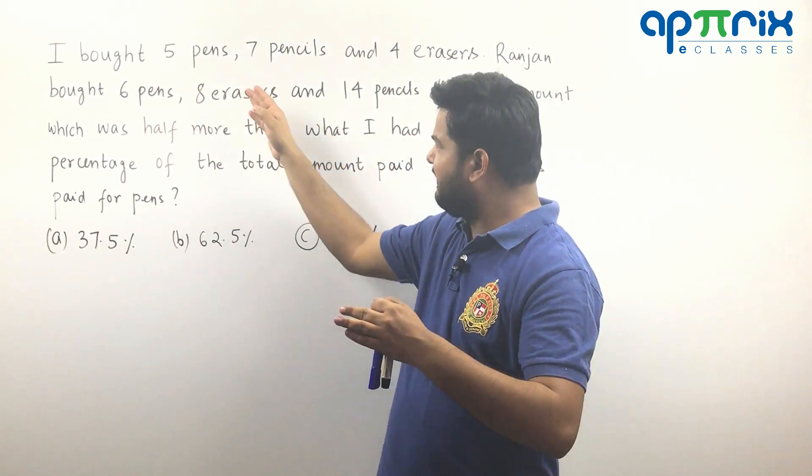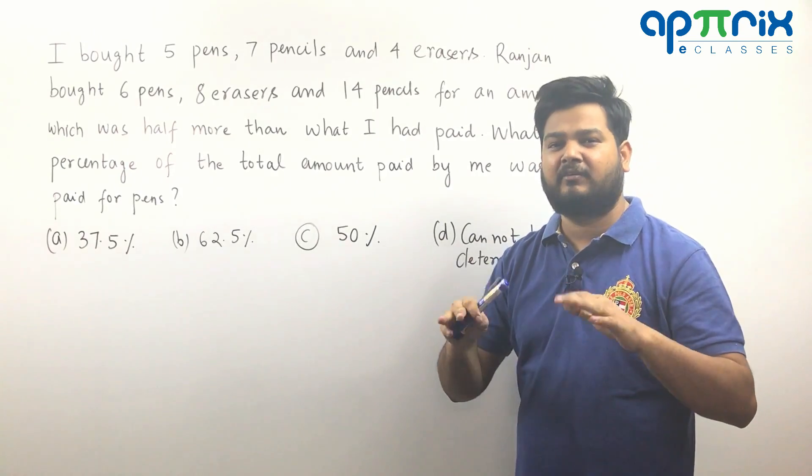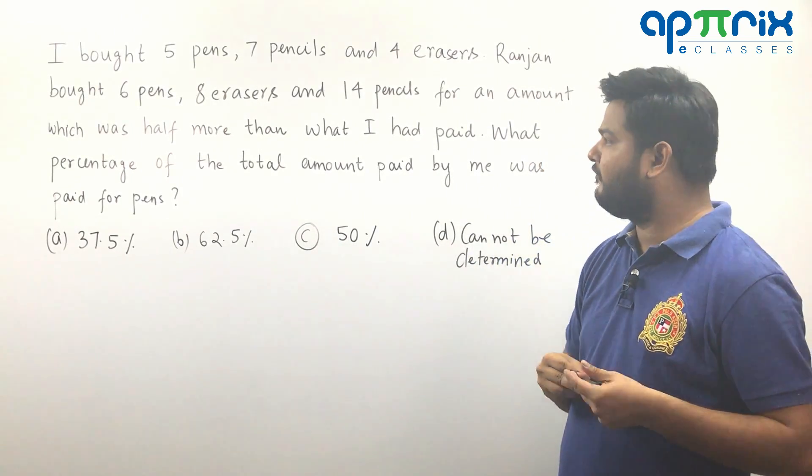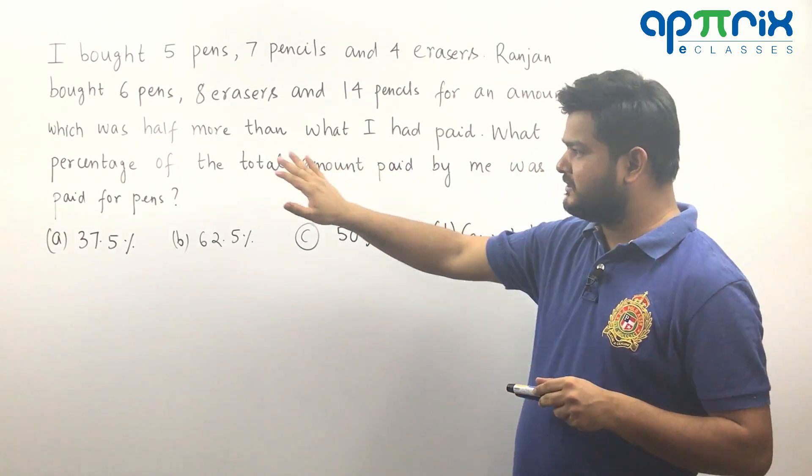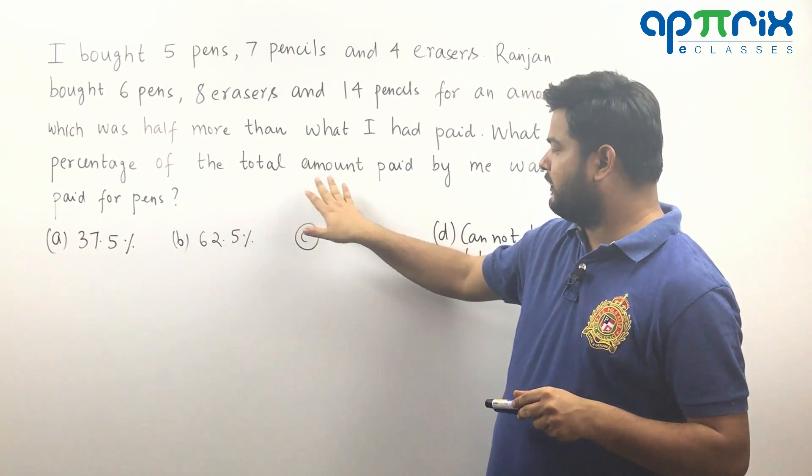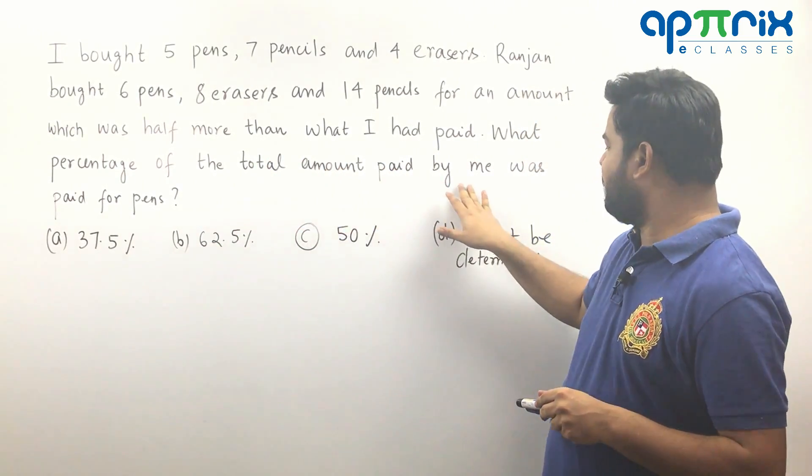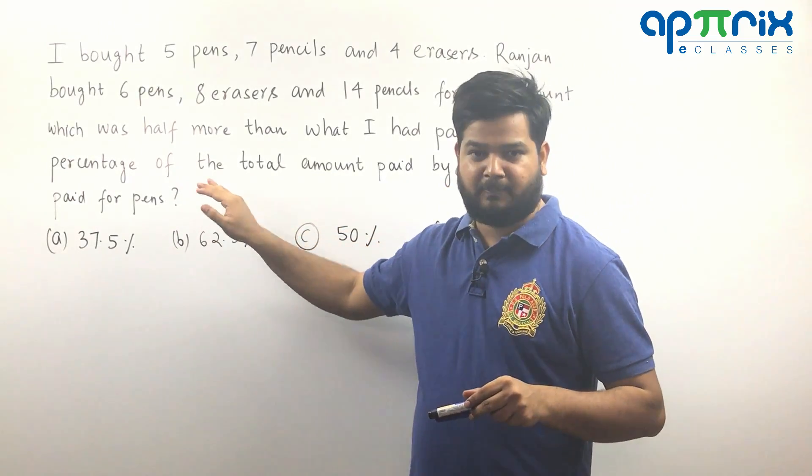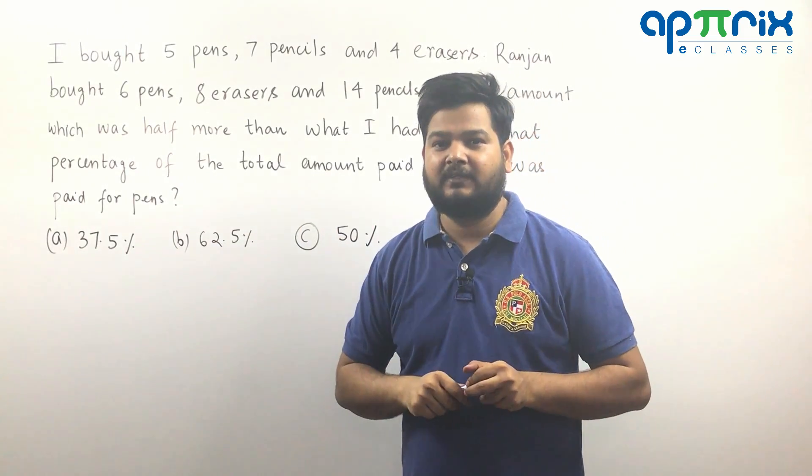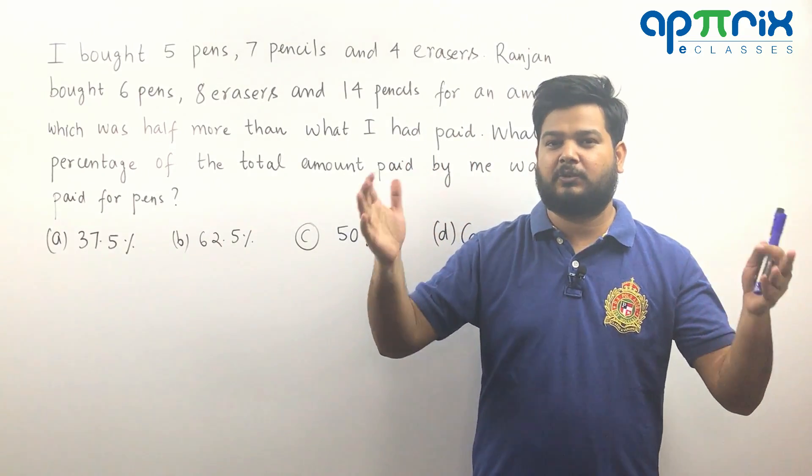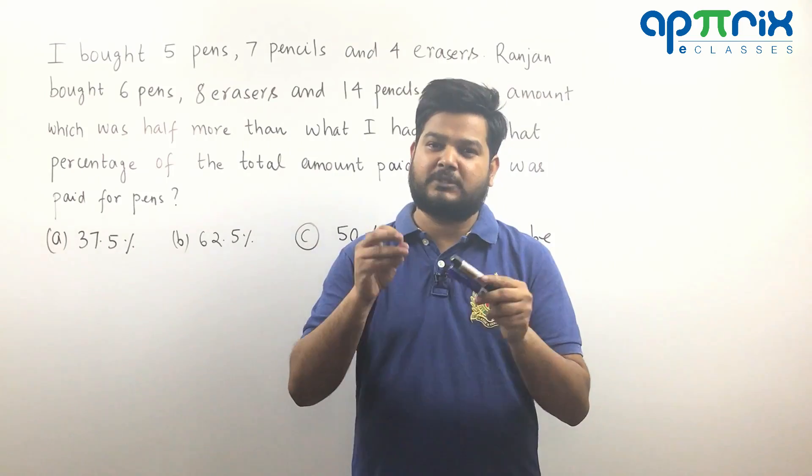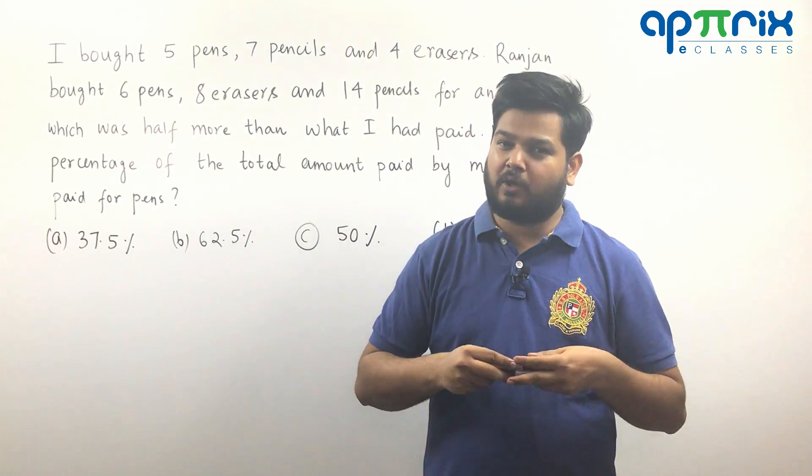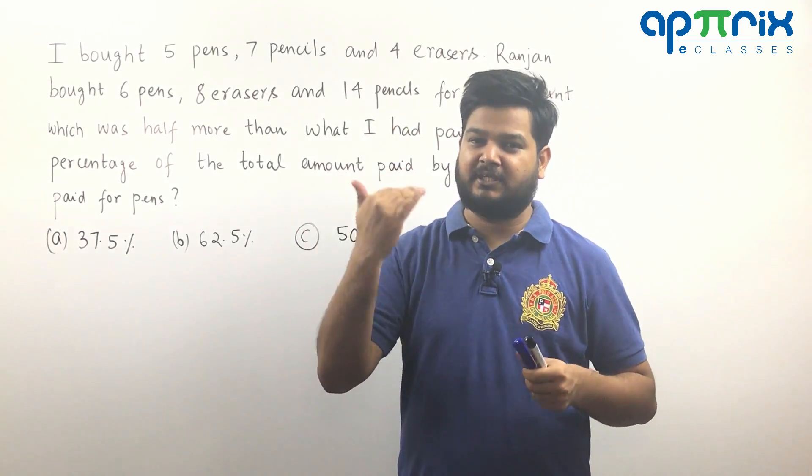Ranjan bought these many pens, erasers and pencils by paying 50% extra, half more than what I have paid. Then it says what percentage of the total amount paid by me was paid for pens. Now this question is asking that suppose I paid total amount, let's say I spend around X rupees, then I want to find how much I spend on pens and what is that value as a percentage of X.